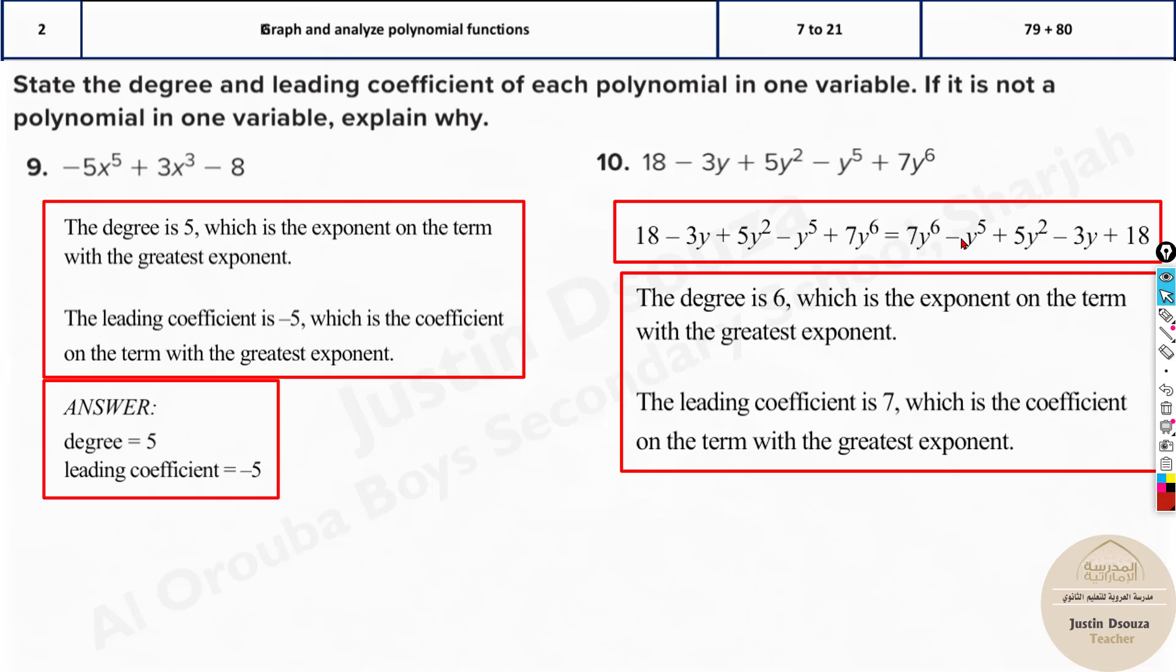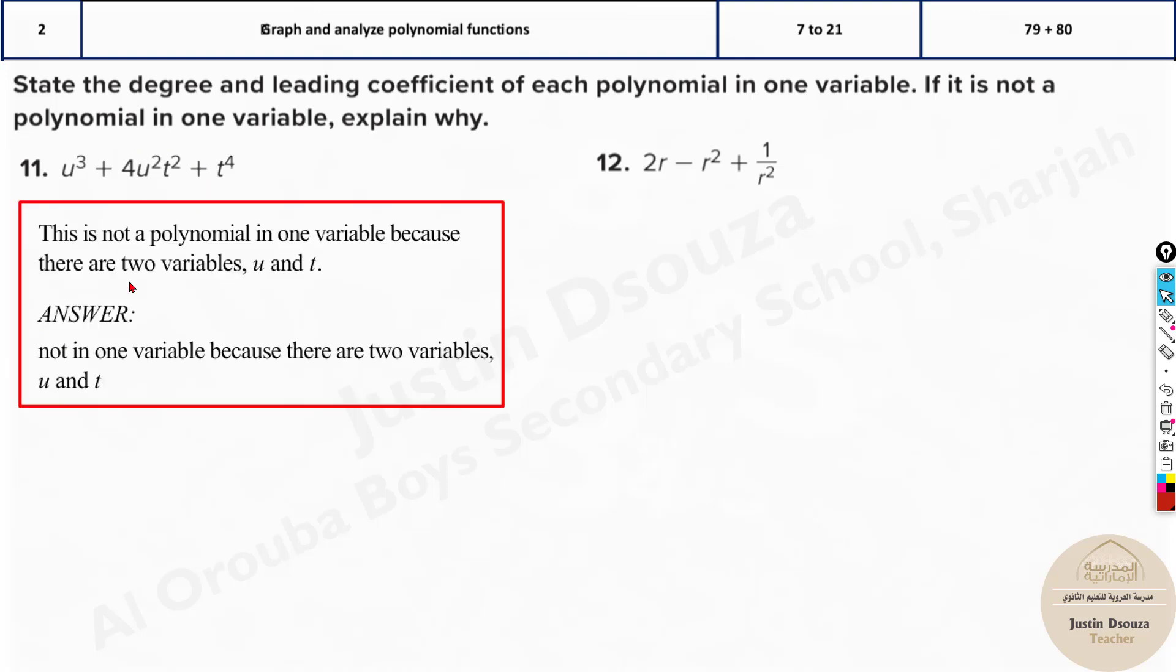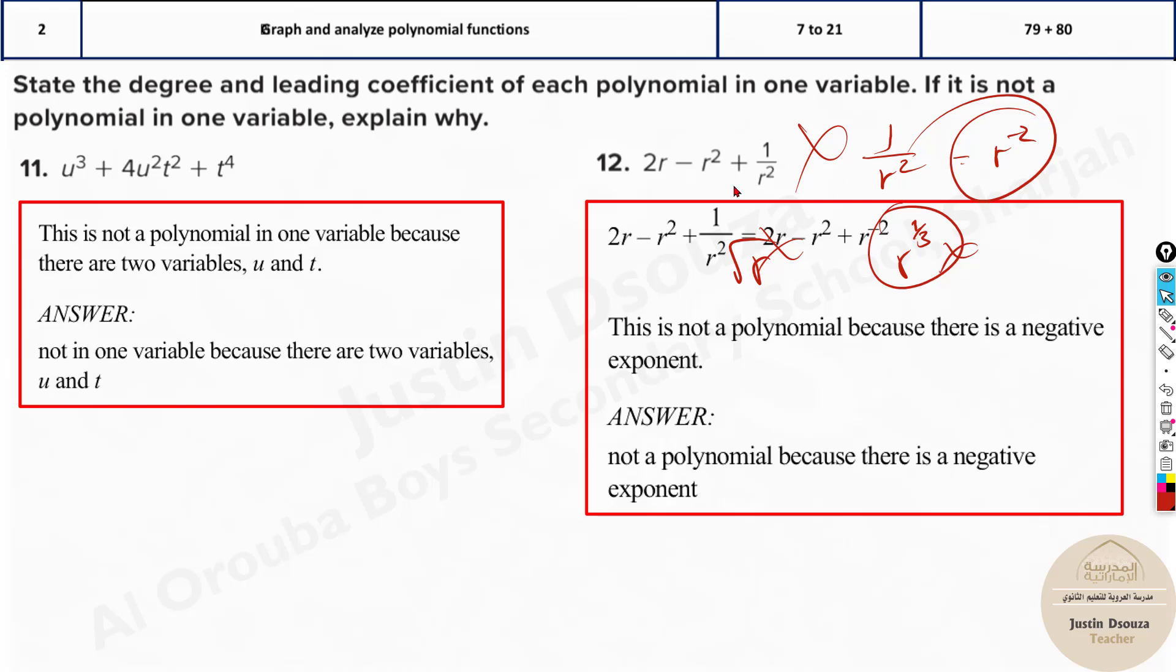Now this, what they have done is they have just rearranged and written with the highest degree starting at the first. This is not required, you can just see the highest degree and write it. Now what about these? The degree over here is 4 and even over here it is 4 actually because 2 plus 2 is 4, right? But since we are dealing with one variable, it's clearly mentioned it's one variable. Now this is not a one variable. There are two separate variables. So no, this is not a polynomial in one variable. Here you can see there is 1 divided by r squared. That means r to the power minus 2, right? This is not a polynomial. If it was square root, no. r to the power 1 by 3, no. So only if the powers are 1, 2, 3 and positive integers, only they are considered. So this is not a polynomial because there is a negative power over here.